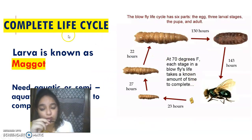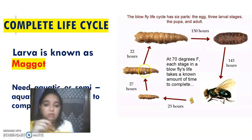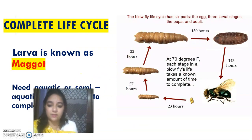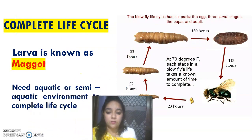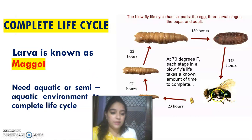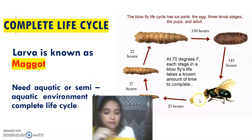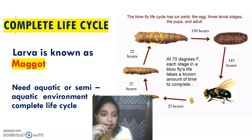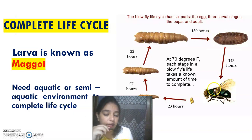What is the meaning of complete life cycle? Complete means that the adult lays eggs, which hatch into larvae — L1, L2, L3 — and finally pupa, and finally adult.